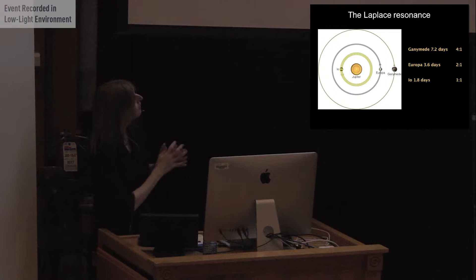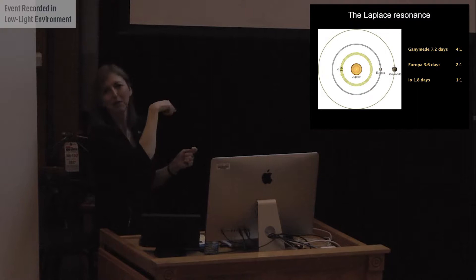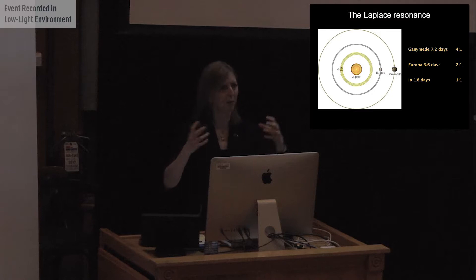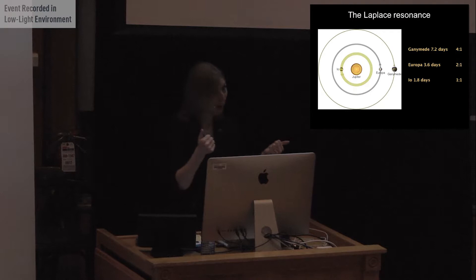But you will see that for every one orbit that Io makes, Europa makes half an orbit and Ganymede makes a quarter of an orbit. So basically Ganymede goes around four times, two times for Europa, one time for Io. And as you can see from this animation, this means that the moons interact with each other periodically. And what that means is they're always tugging on each other. Their gravitational pull is always tugging them inside or out. And that has the result of keeping their orbits very slightly eccentric. So they're not perfectly circular. They're not far off, but they're not perfectly circular.